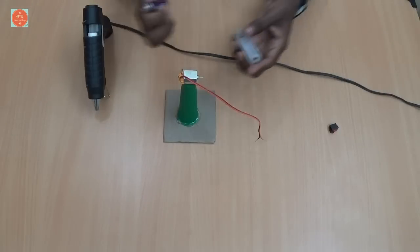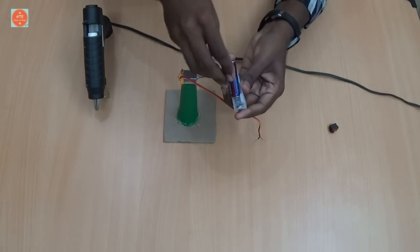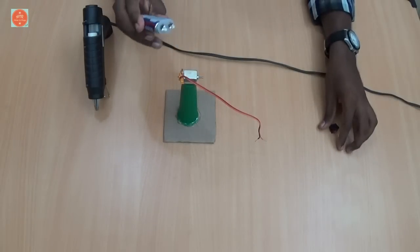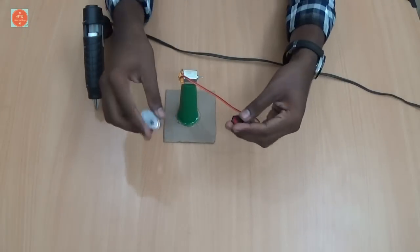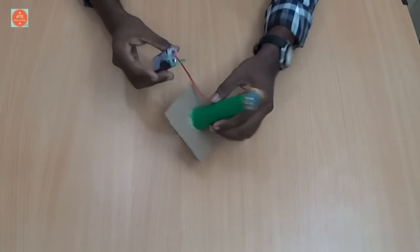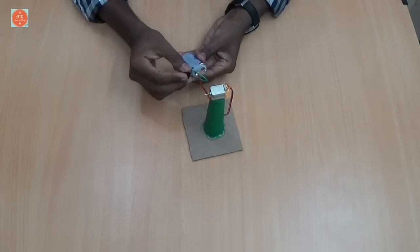Now take the battery holder and insert the batteries. Then take the switch and connect the wires. Now I have connected the wires. The motor works.